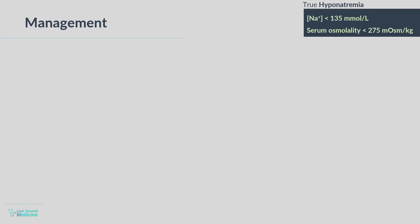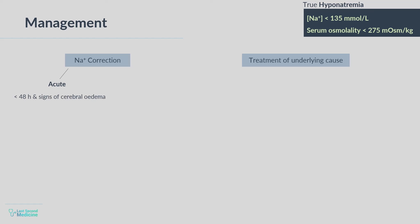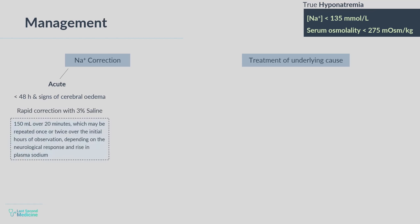Now the management. Treatment of hyponatremia includes correction of hyponatremia itself and treatment of the underlying cause. The treatment is critically dependent on its rate of development, severity, presence of symptoms, and underlying cause. If hyponatremia has developed rapidly in less than 48 hours and there are signs of cerebral edema such as obtundation or convulsions, sodium levels should be restored rapidly to normal. This is achieved by infusion of 3% hypertonic saline — a common approach is an initial bolus of 150 milliliters over 20 minutes, which may be repeated once or twice depending on neurological response and rise in plasma sodium.